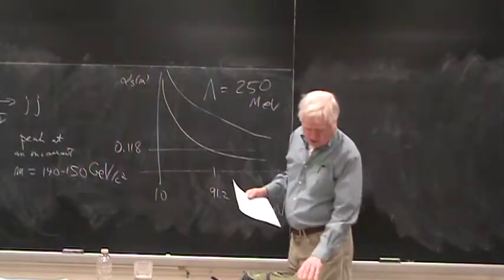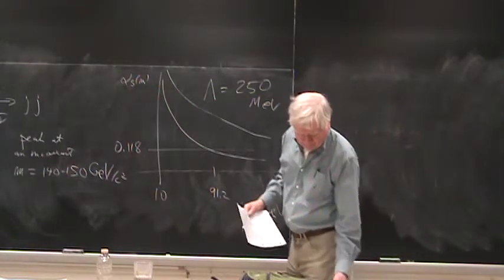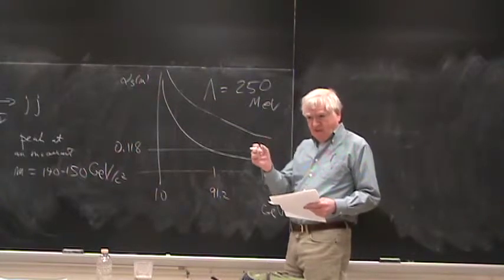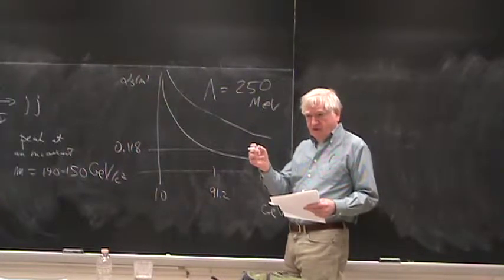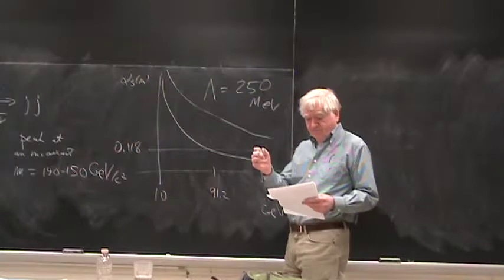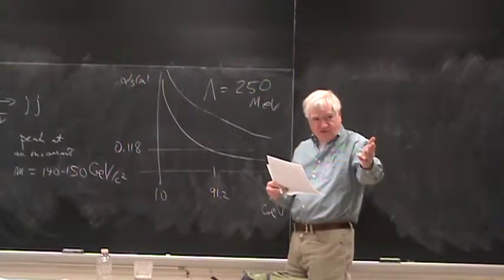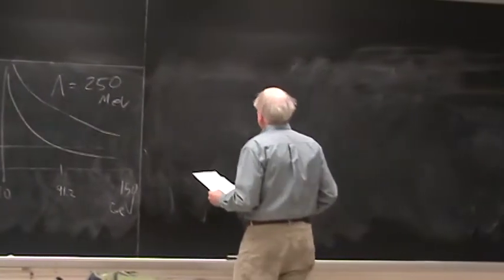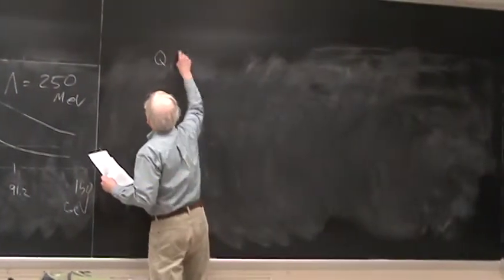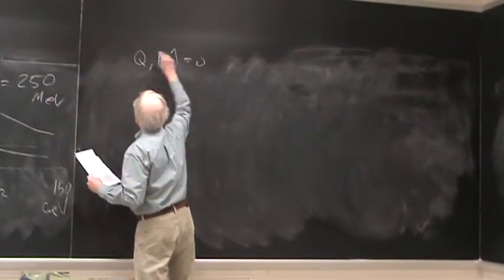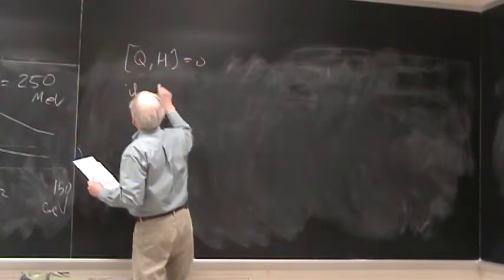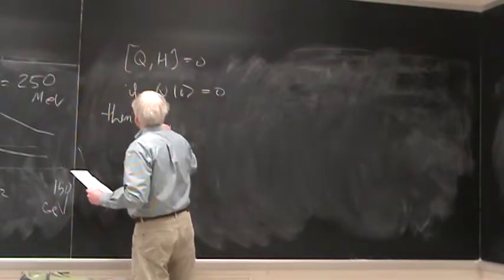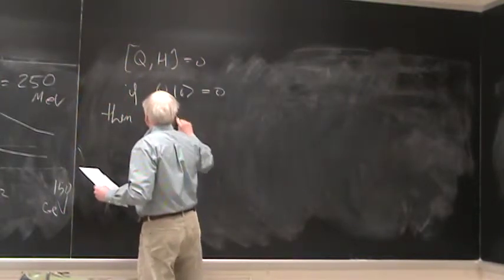With regard to the Goldstone theorem — you guys missed that. Do you want me to review the Goldstone theorem? So it would be a review for you, but reviewing is good. Suppose Q is a conserved charge. If Q annihilates the vacuum, then Q generates a symmetry.